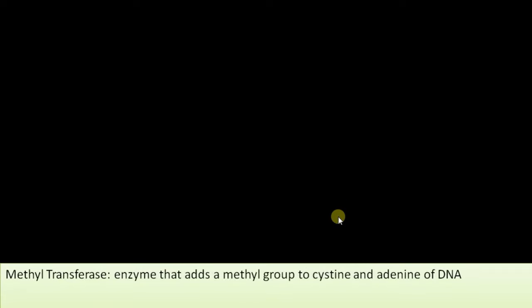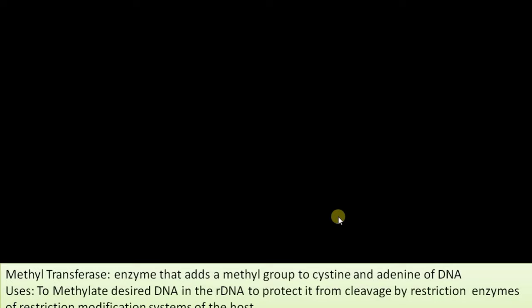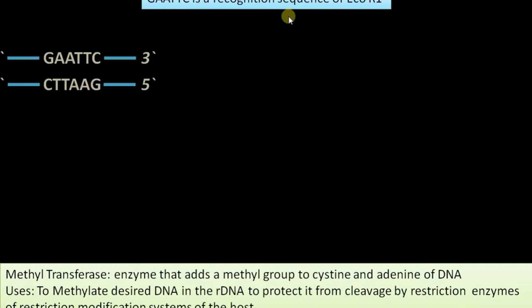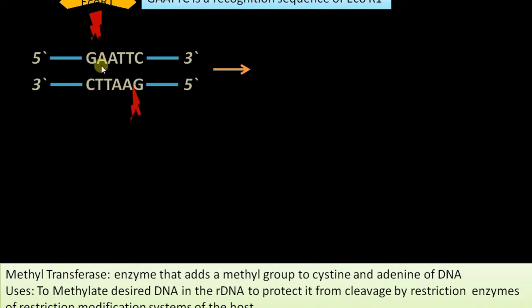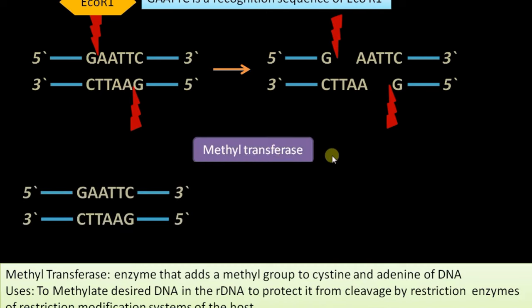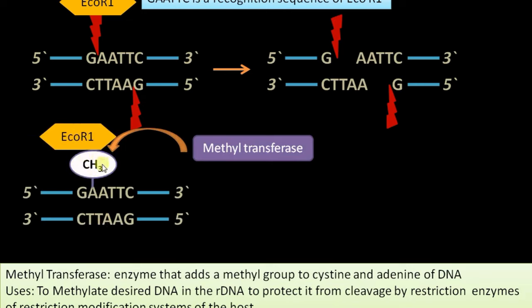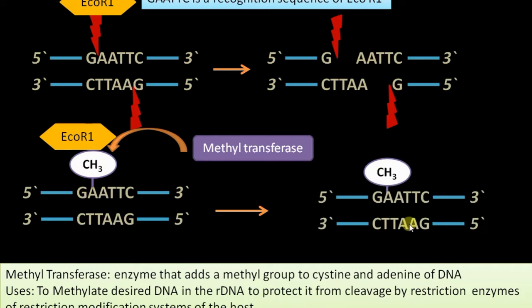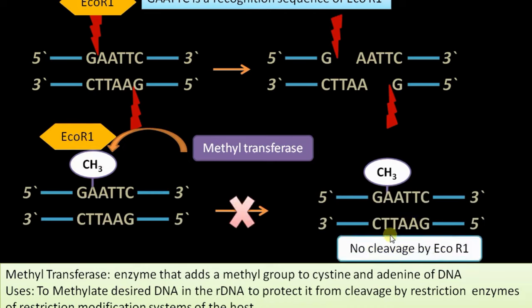The final enzyme is methyl transferase — an enzyme that adds a methyl group especially to adenine of DNA. It is used in recombinant DNA technology to methylate a fragment in order to protect it from digestion by restriction enzymes. For example, GAATTC is the recognition sequence for EcoRI. If methyl transferase adds a methyl group to the adenine residue at this site, EcoRI cannot access the restriction site, so that strand is protected from cleavage — there is no digestion by EcoRI. Ligase, the third class, joins two DNA molecules by forming phosphodiester bond — also called sealing enzyme or molecular glue.